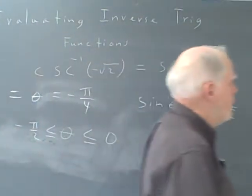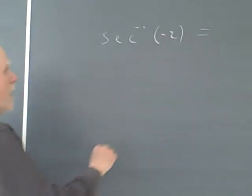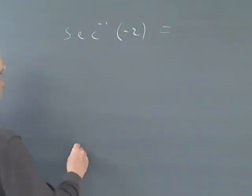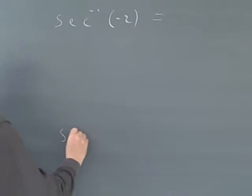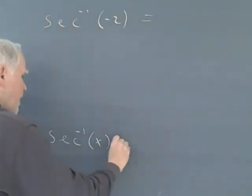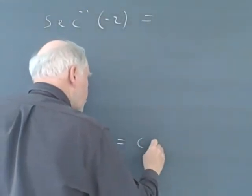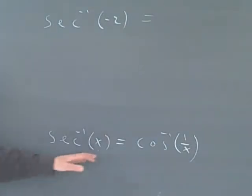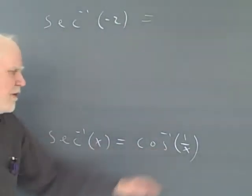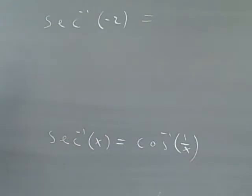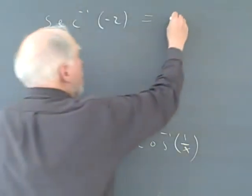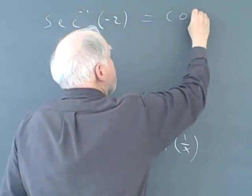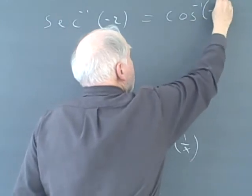Let's go over here to the secant inverse of negative 2. And what I'm going to use, the identity I'm going to use for this, I'm going to use the fact that the secant inverse of x equals the cosine inverse of 1 over x. By the way, this is very easy to prove, and if you're taking trig, you should look in your trig book for the proof. It's very simple. But here's the identity that you use. So I'm going to say, this is cosine inverse of negative 1 half.